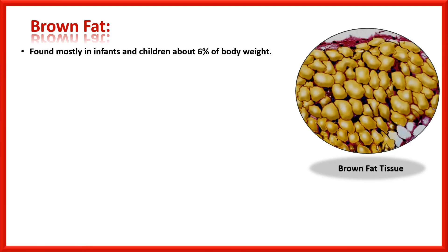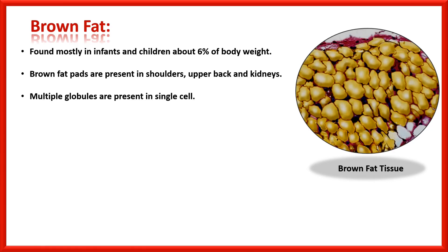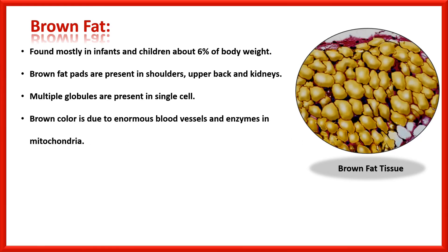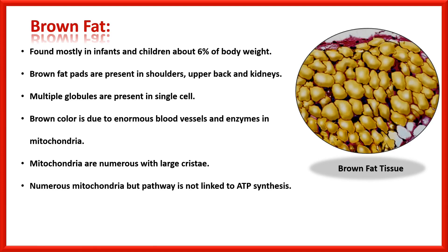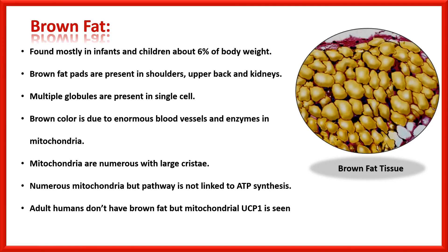Brown fat cells are found mostly in infants and children, comprising about 6% of body weight at birth. Brown fat pads are present in the shoulders, upper back, and kidneys of infants. Multiple globules are present in a single cell — note this difference from white fat. The brown color is due to enormous blood vessels and enzymes in the mitochondria that impart a brownish color. Mitochondria are numerous and large, but their pathway is not linked to ATP synthesis — their function is heat production. Adult humans do not have brown fat, but mitochondrial UCP1 (uncoupling protein) is seen, which uncouples the pathway from ATP synthesis, indicating that brown fat could be used to generate energy in adults.